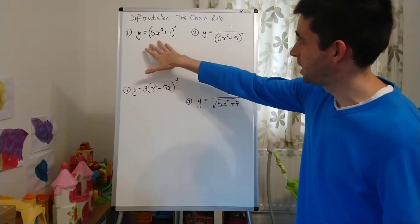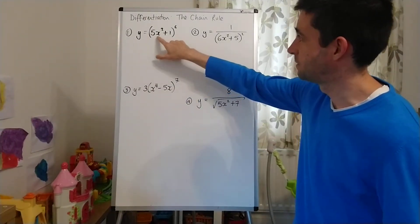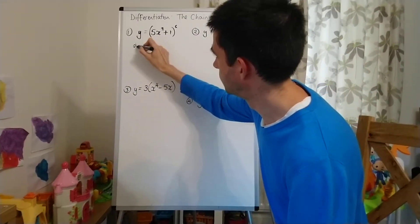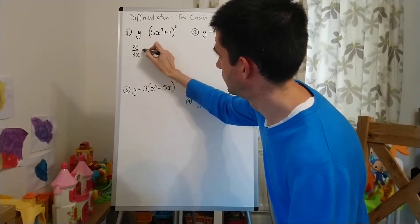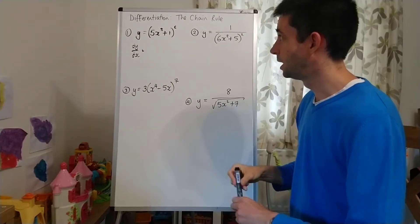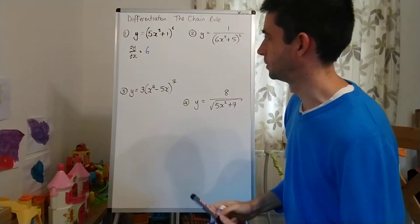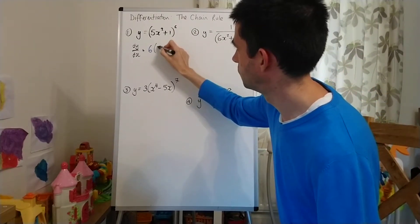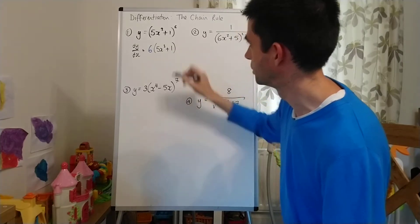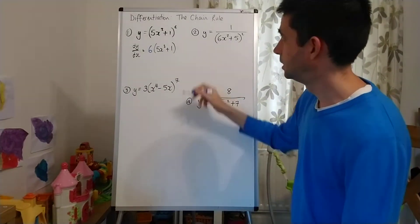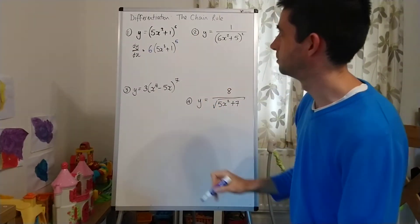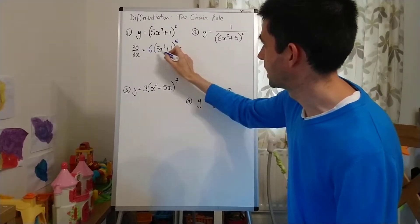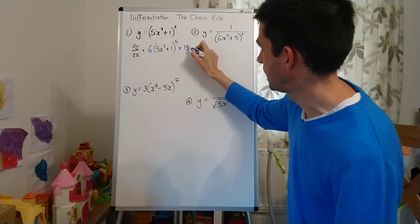So for this first one here where we have y equals (5x³+1)⁶, if I'm finding dy/dx I'm going to do power down. So I'm going to put 6 down the front. 5x³+1, that bracket is not going to change. The power is going to decrease by 1. And I'm going to multiply by the differentiated bracket, which is 15x².